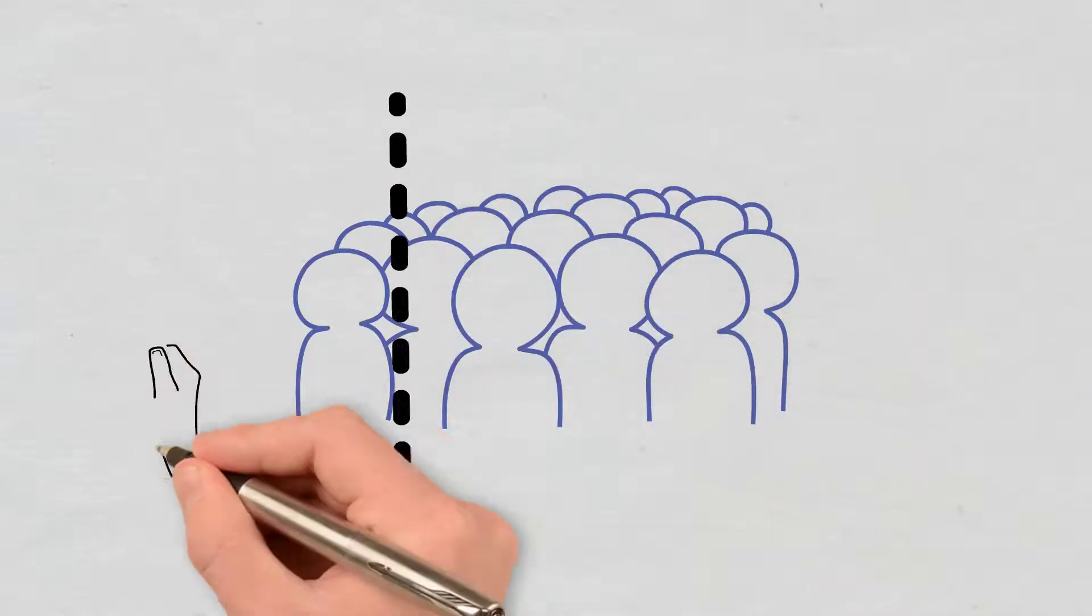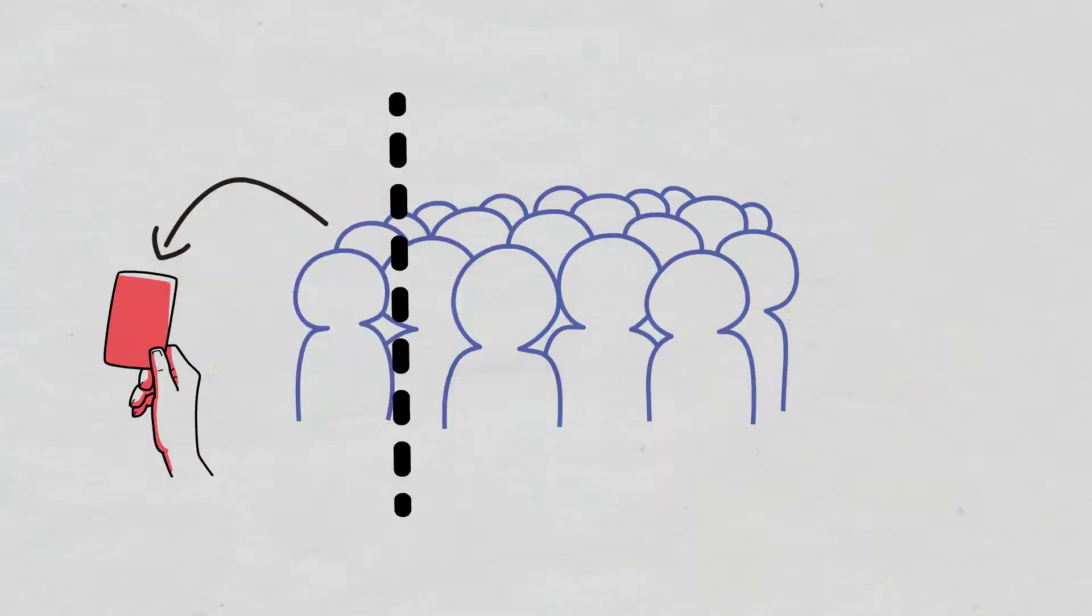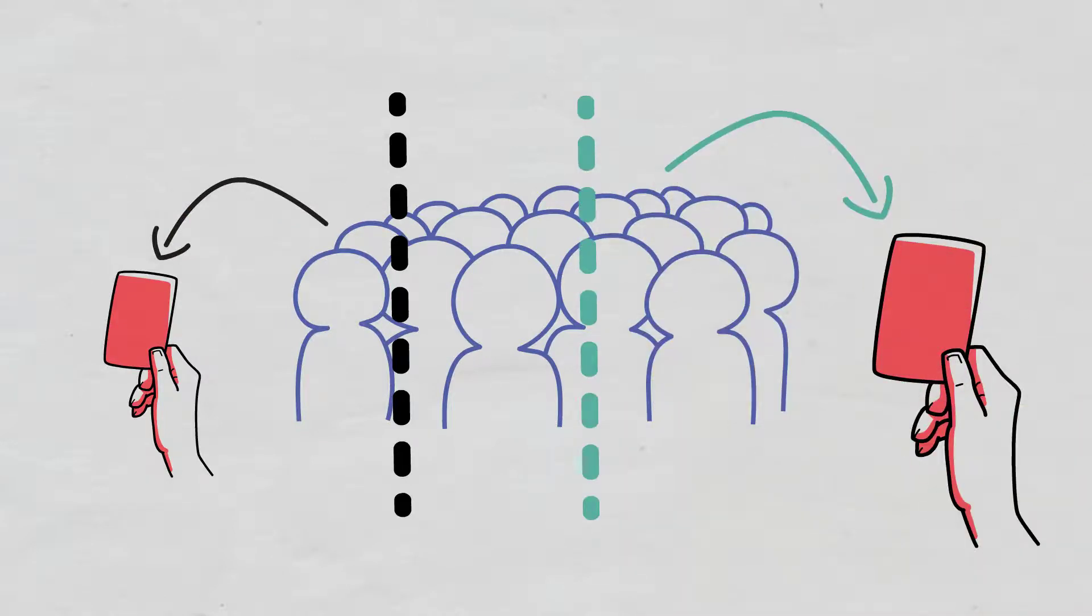Let's say that 10 out of 100 validators are down. In such a case, the slashing penalty is smaller per validator than if 25 out of 100 validators are down.